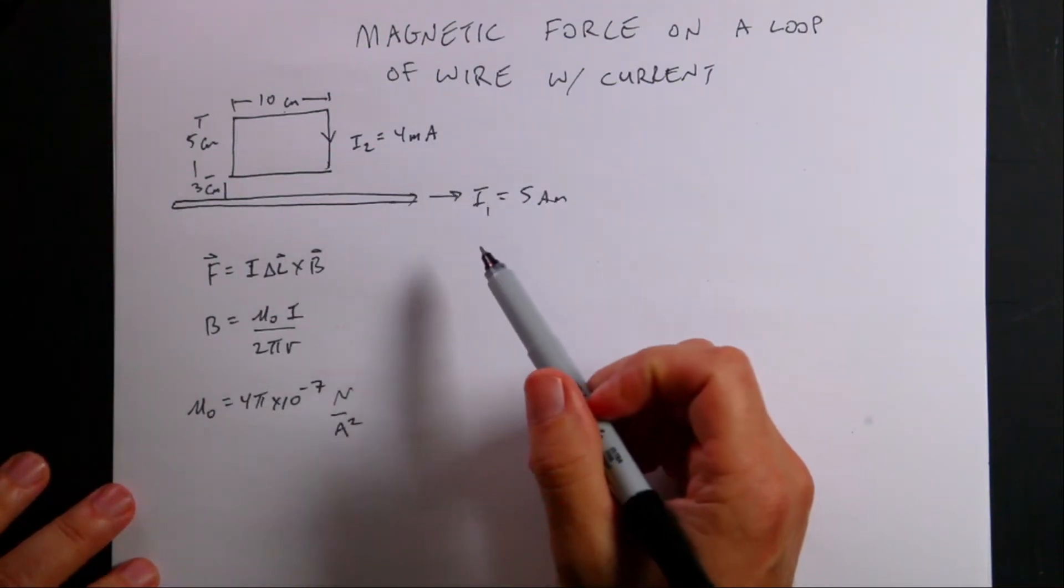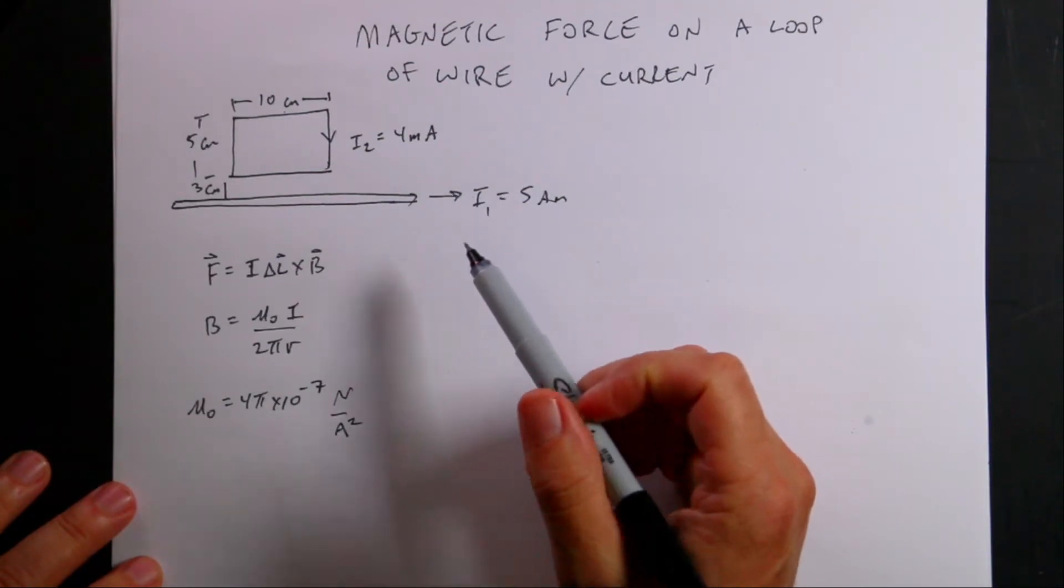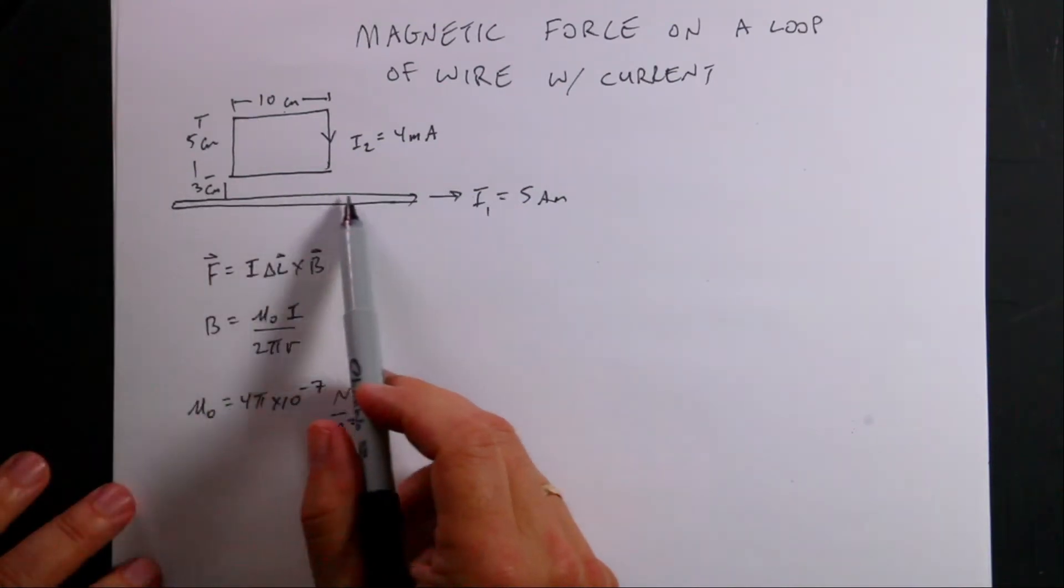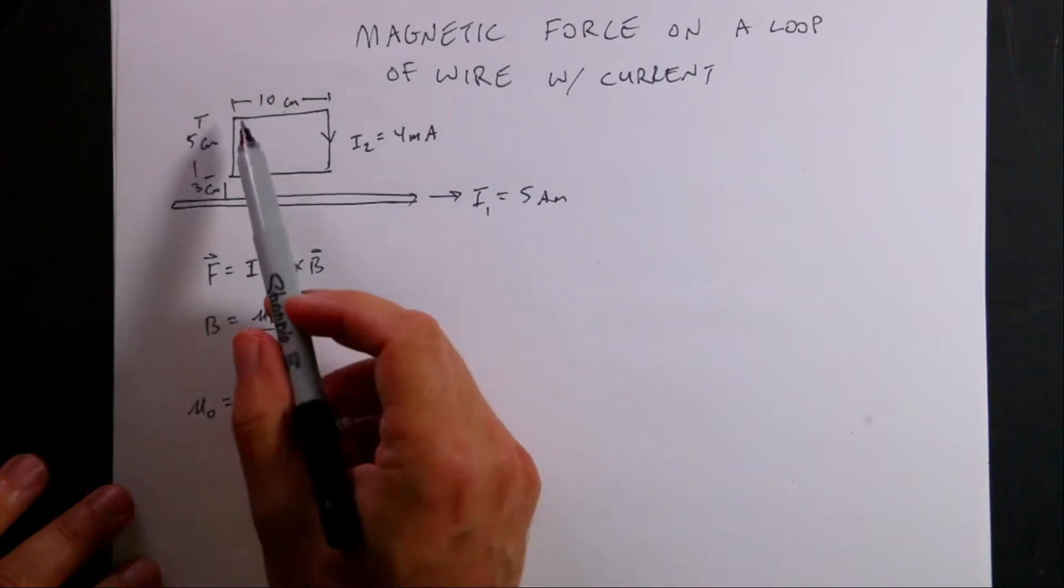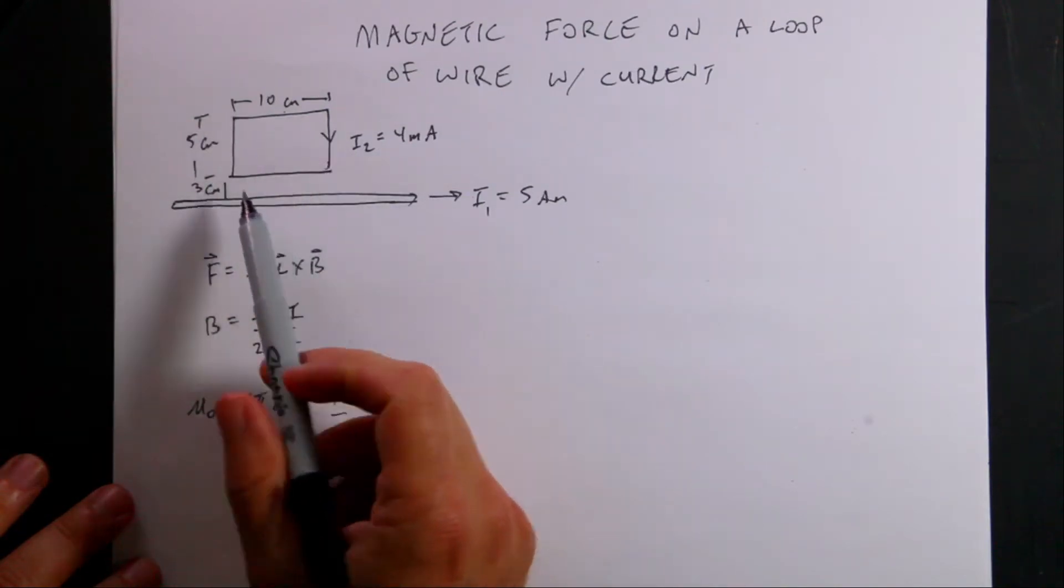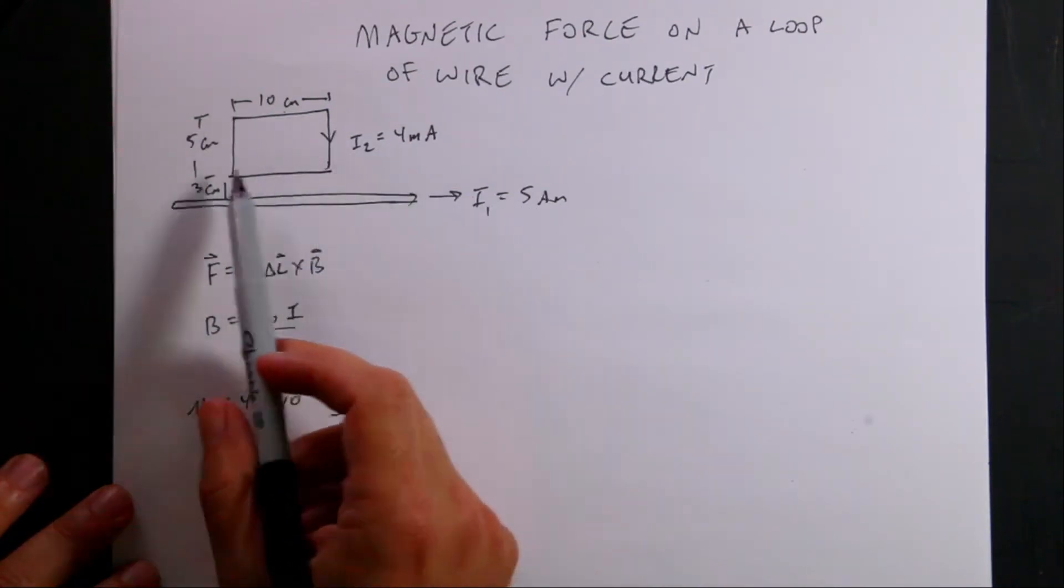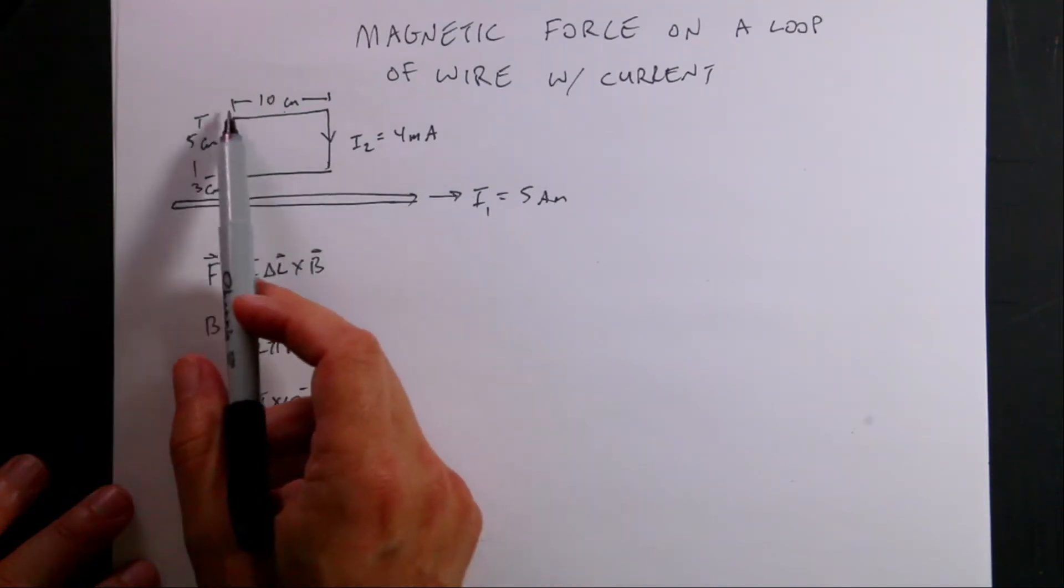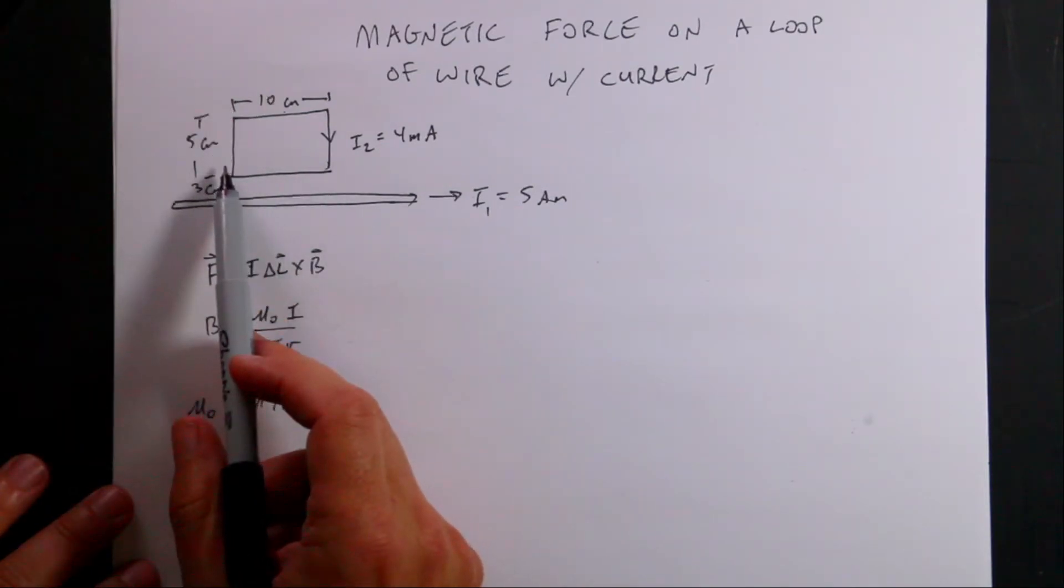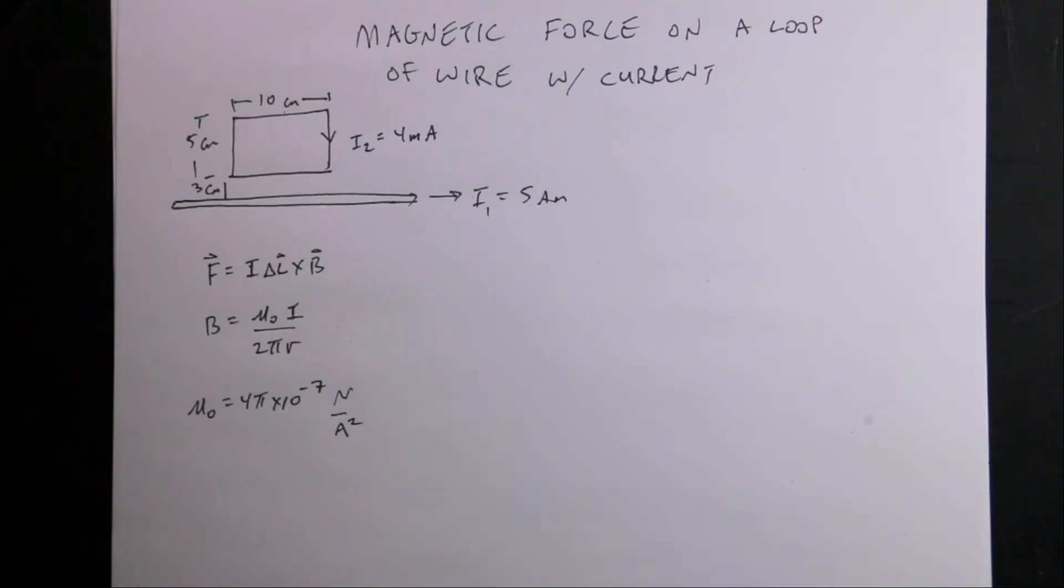What is the force on this loop of wire? Here we have a long straight wire carrying electrical current and then another loop of wire that has electrical current. This one's 5 amps and that's 4 milliamps. The dimension is 3 centimeters away from the bottom and then it has a length of 5 by 10. So the question is what's the net force on it?